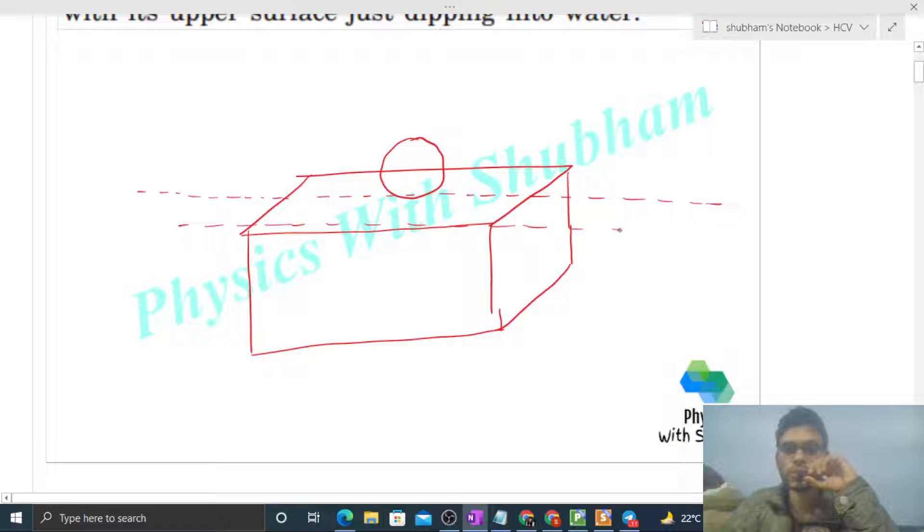Something like this, this is the free surface of water. And the top surface of the cube is just below the water, meaning this lead will not be inside the water. This will be outside the water.